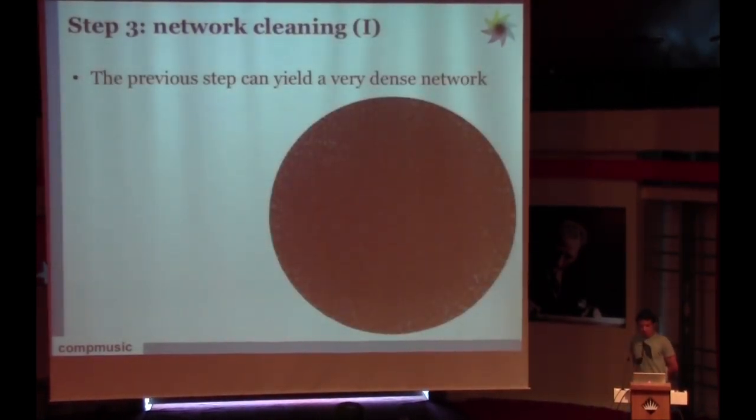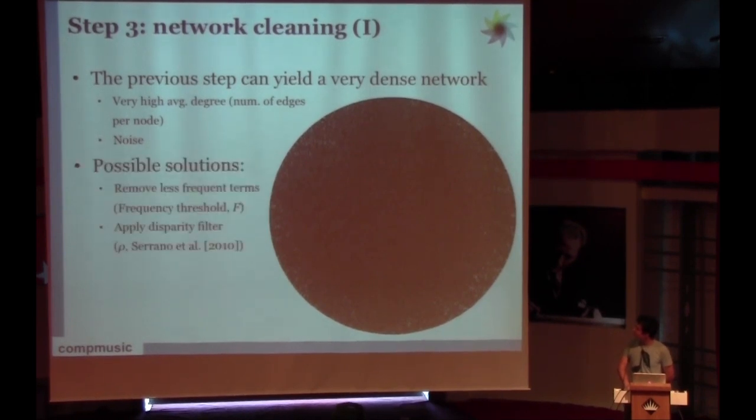The problem is that this step produces a very dense network. You can't see anything, right? Because there are more edges than the nodes in this network. Basically, the problem of this network is that it's very dense. There is a large number of edges per node, and it has a lot of spurious names and adjectives.